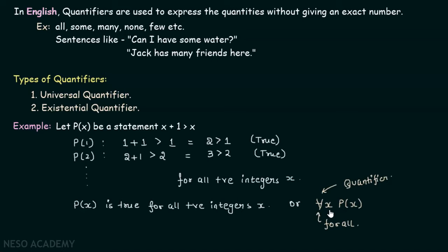Here x represents positive integers, p(x) is our predicate, and this notation is called 'for all.' We will use this notation — it represents 'for all' — placed in front of x p(x). We read this as: for all x, or for all positive integers x, p(x) is true.